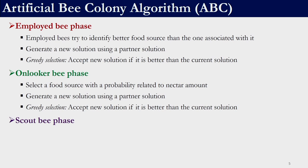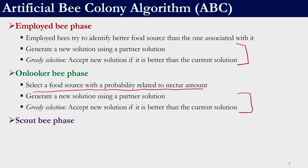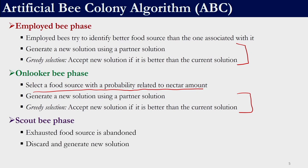In the employed bee phase, employed bees try to identify a better food source than the one they are currently associated with. In terms of optimization, we generate a new solution using a partner solution and then perform a greedy selection — accepting a new solution only if it is better than the current solution. In the onlooker bee phase, we similarly generate a new solution and perform a greedy search, but here we select a food source based on a probability related to the nectar amount, not every food source. In the scout bee phase, the exhausted food source is abandoned and a new solution is generated.